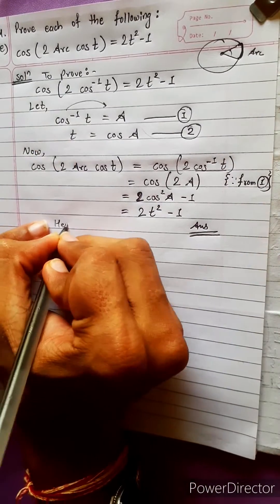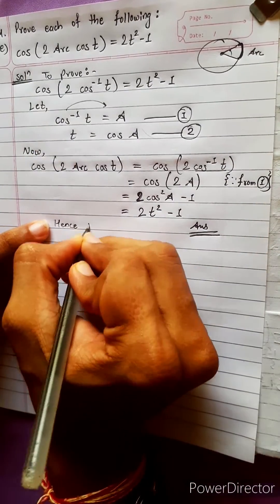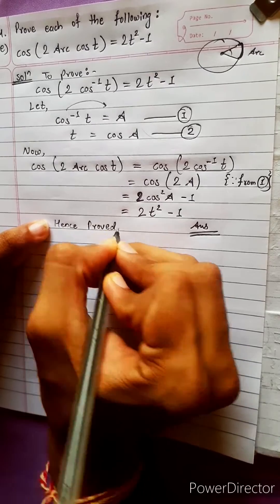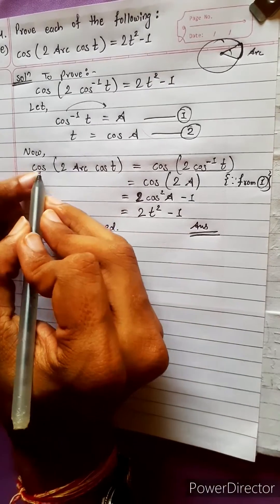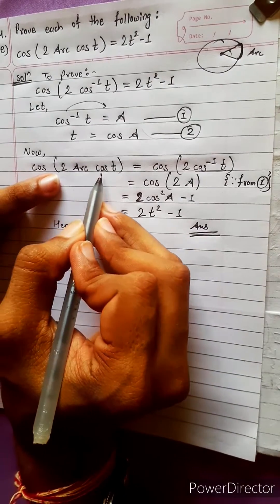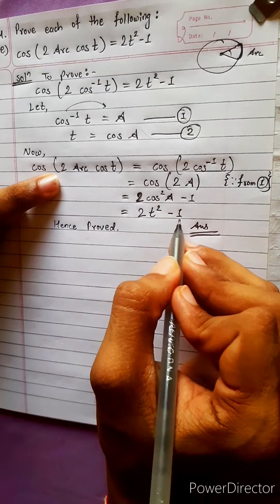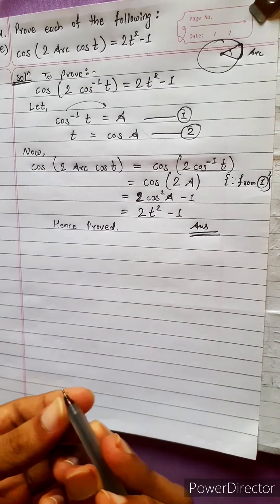Then write: hence proved. Cos 2 arc cos t — its value is 2t square minus 1.